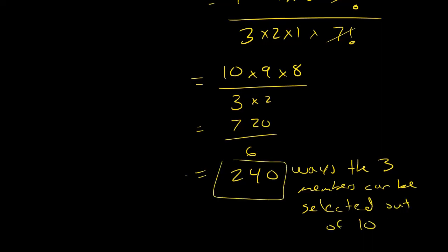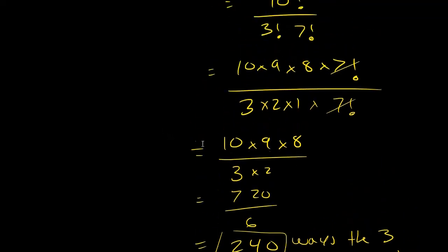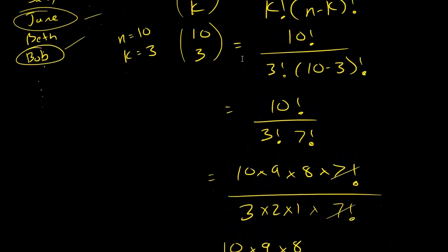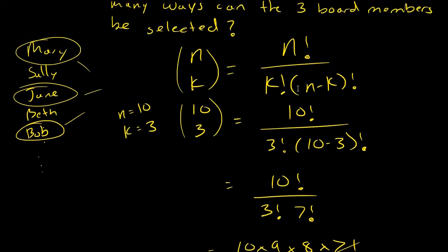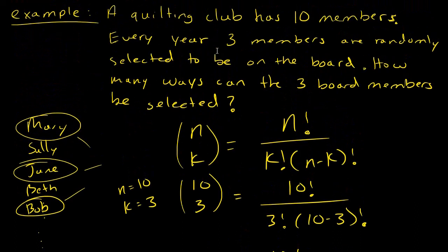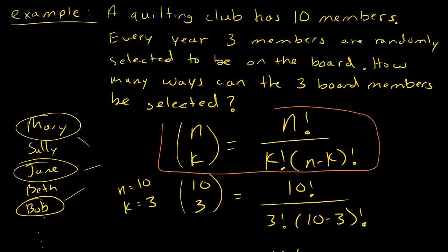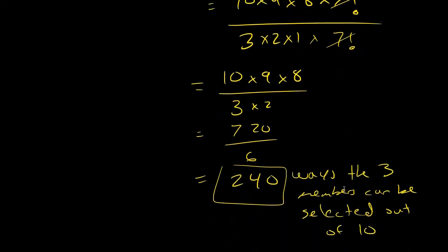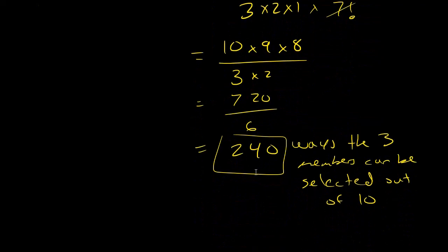Similar to permutations, if you ever use this counting formula and end up with a decimal or a fraction — something that's not a whole number — as your final answer, then you know you've made a calculation error. Your answer should always be a whole number.